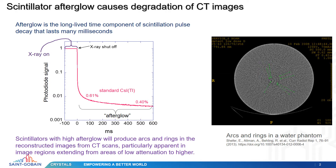Going down slowly to 0.4% at 500 milliseconds. This extra light can produce arc and ring artifacts in the reconstructed images of CT scans. These artifacts are particularly apparent in image regions extending from areas of low attenuation to high. The photo on the right shows an example of arc and ring artifacts in a water phantom, taken from the reference listed there.